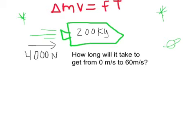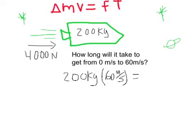So let's just go ahead and do this then, we're going to say 200 kilograms times 60 meters per second is going to equal the amount of force, which, remember, force is measured in newtons. So we're going to say 4000 newtons times the time.